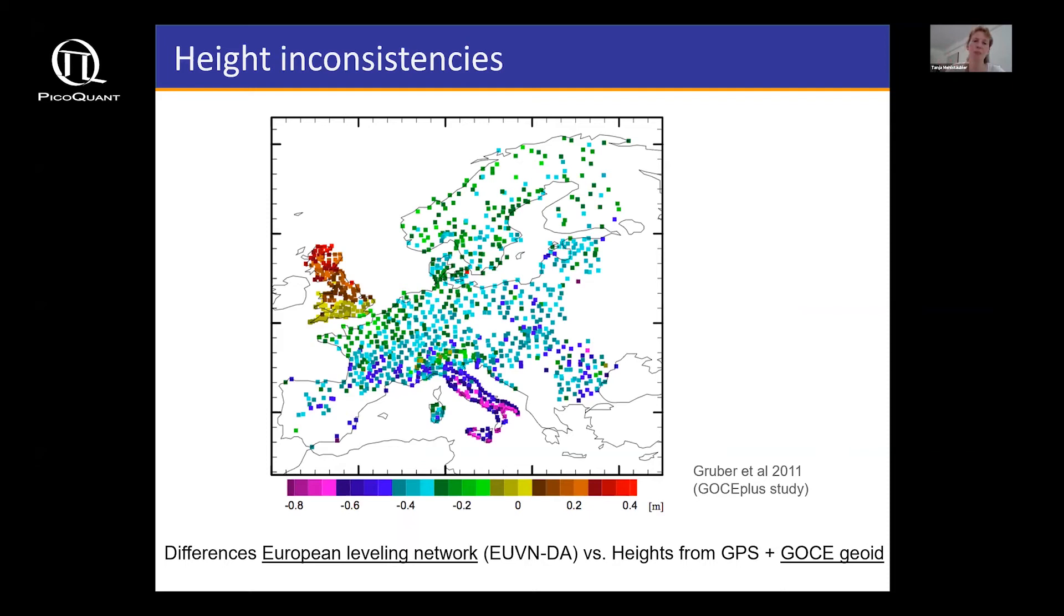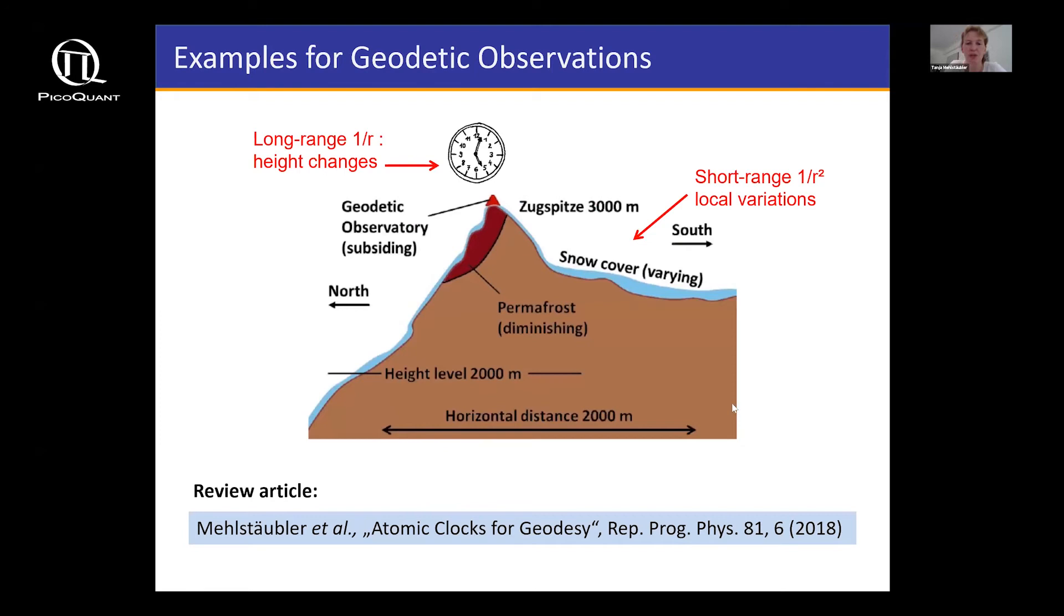If we compare, for instance, the knowledge of our heights in Europe, here you see height discrepancies. What I'm comparing here is the height level measured on Earth with the gravimeter, and now we compare to satellite data. We see there's a discrepancy. These data don't match, and you see a gradient all over Europe from the north of the UK, Scotland, down to Italy, Sicily. There are height discrepancies of plus minus half a meter. So there's definitely a need to get better knowledge of the geoid.